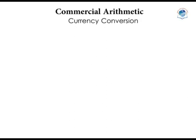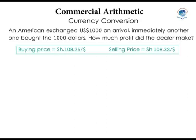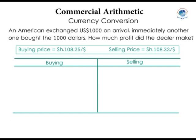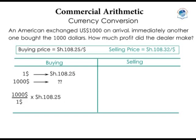Let me show you how the bank will make money. Assuming someone from the United States exchanged $1,000 on arrival in Kenya, and then immediately another person bought the $1,000. The person arriving will sell the dollars to the dealer — so the dealer buys $1,000. The buying price is 108.25 shillings per dollar, so the dealer pays $1,000 × 108.25 = 108,250 shillings to the visitor.